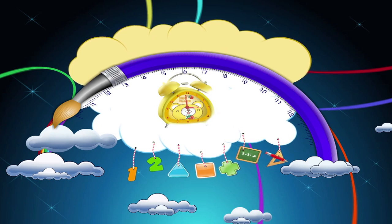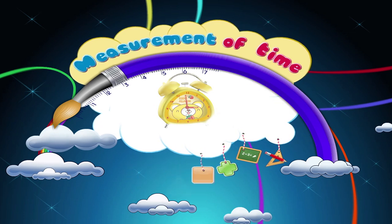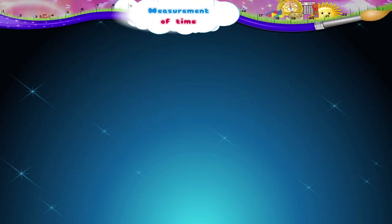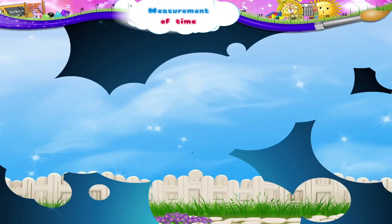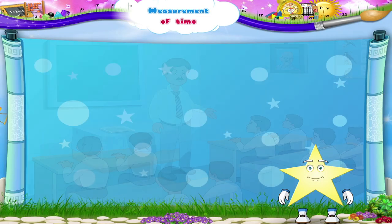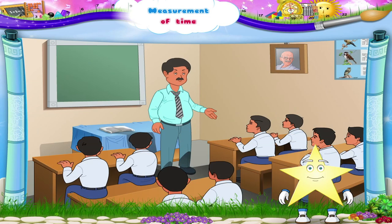Measurement of Time. Starry, your teacher said that you are going to get a week's holiday. Isn't that great? Do you know how many days are there in a week? Yes, seven days. Let's revise their names.